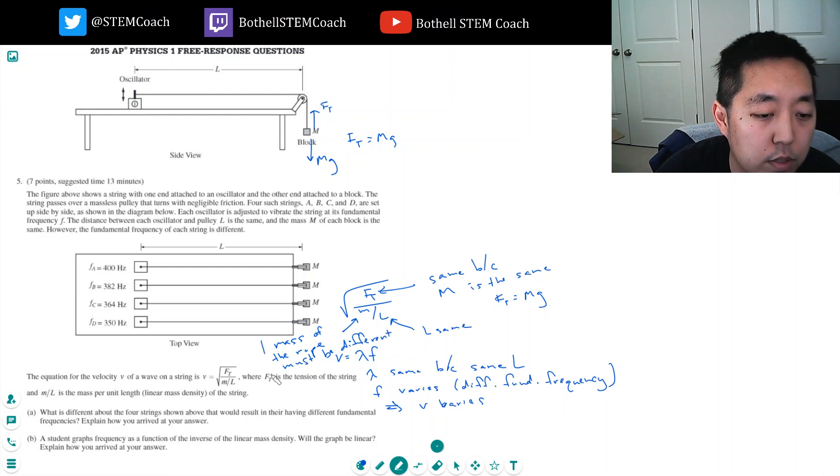Hence, the mass of the rope must be different. Okay? So, this is the key part. And I kind of outline it. You would have to explain it in paragraph terms. But how I just described it to you is how you would write it out.